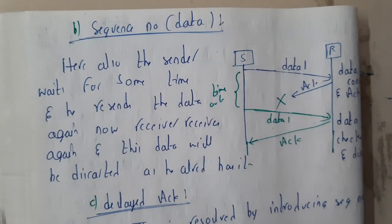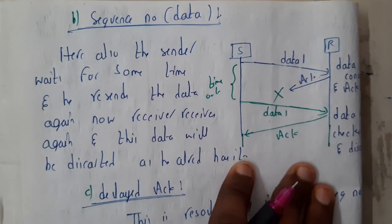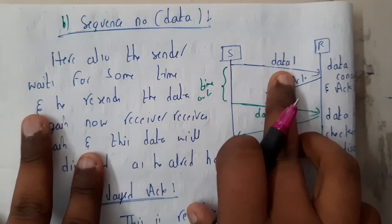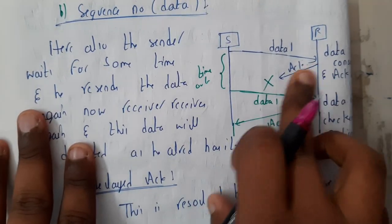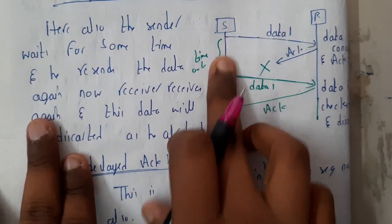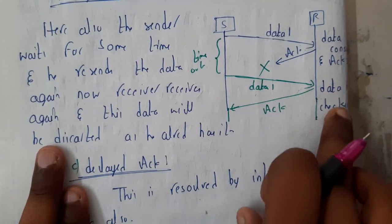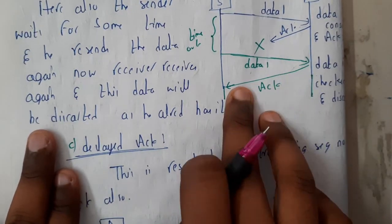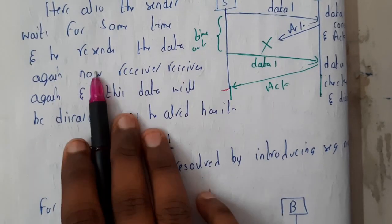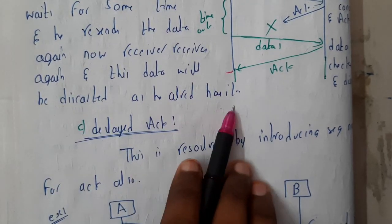By adding sequence numbers, we gain this advantage: the sender sends data packet number one. The receiver gets it, consumes it, and sends an acknowledgement — but the sender doesn't receive that acknowledgement. So the sender resends data one again. The receiver sees data one, recognizes it already has it, discards the duplicate, and resends the acknowledgement. The sender now receives the acknowledgement and proceeds to send data two, data three, and so on.